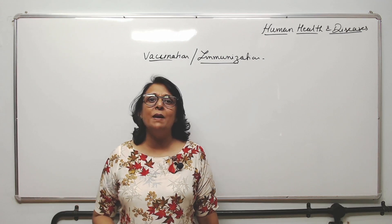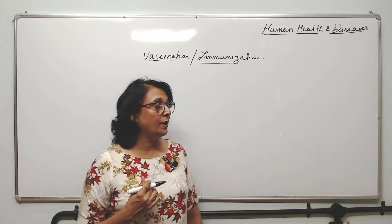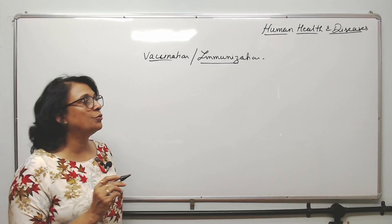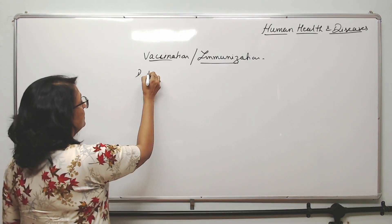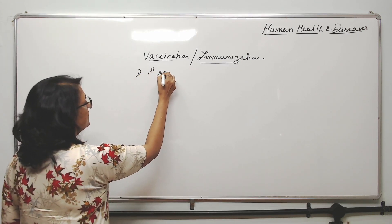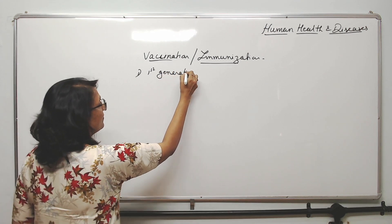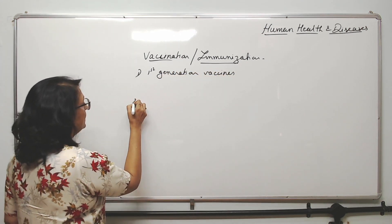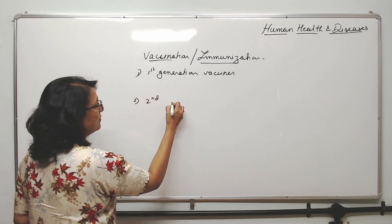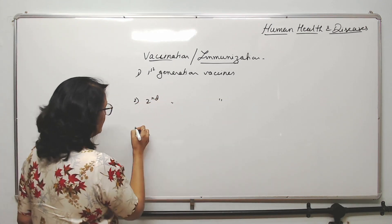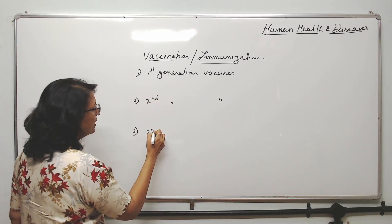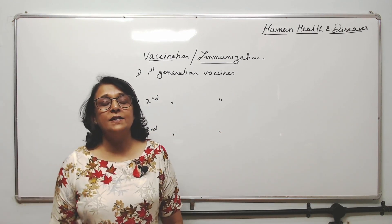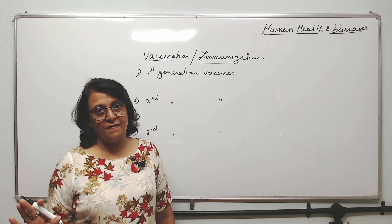Passive immunity means when we are taking ready-made antibodies. Now these vaccines are classified into three categories: the first generation vaccines, second generation vaccines, and third generation vaccines. First generation vaccines are the orthodox method vaccines.